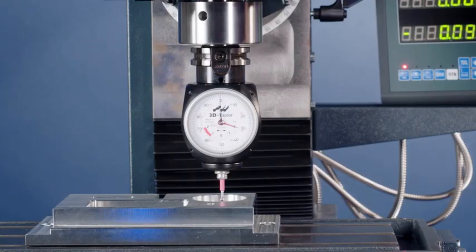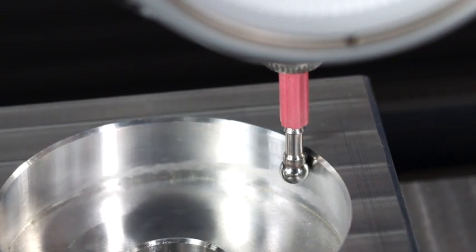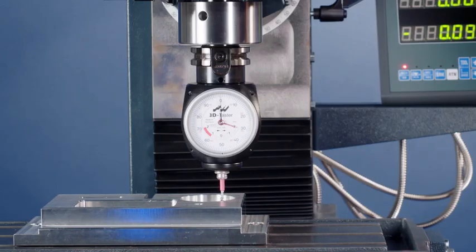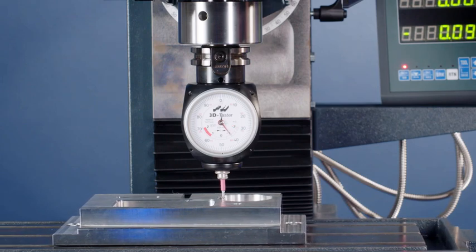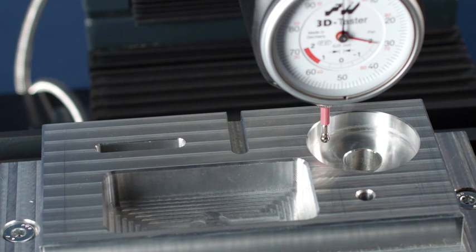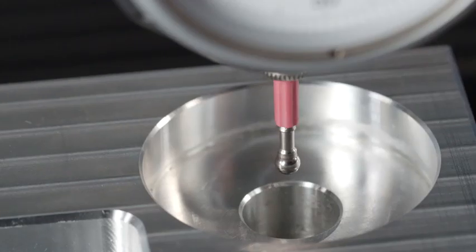Need to find the center of a bore? First, position the probe tip anywhere in the feature. Next, measure the distance in one axis. In this case, we will measure X first. Once you determine the distance, move the sensor back half that distance to arrive at the center of X.